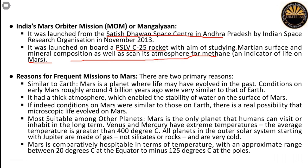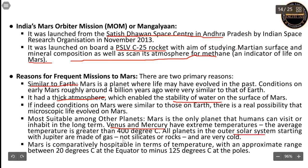Since NASA's Mars mission is in the news, what are the reasons for frequent missions to Mars? First, the planet is very similar to Earth and there may be signs of life. It has a thick atmosphere which may enable the stability of water on its surface. It is the most suitable among other planets since Venus and Mercury are very hot with extreme temperatures. The planets of the outer solar system are made of gas, not rock. Mars has adequate temperatures for some form of life to survive, hence the interest.